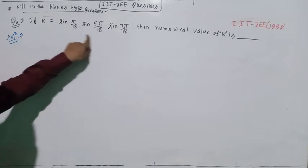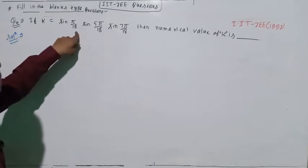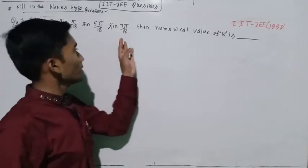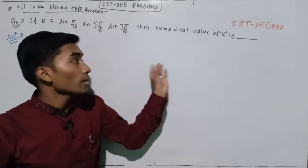If k equals the product of sin(π/18), sin(5π/18), and sin(7π/18), then find the numerical value of k.